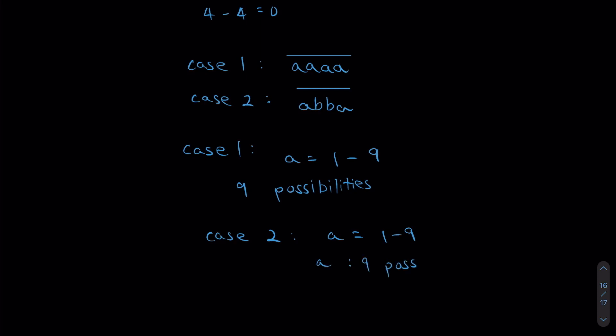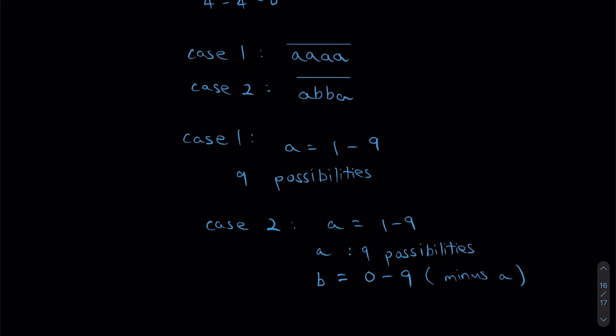So once we filled in A, we're going to look at B now. Now, B can be from 0 to 9, minus A. Because as we know, the numbers can't repeat themselves. Which means B technically only has 9 possibilities as well, because we need to subtract the number already used for A.